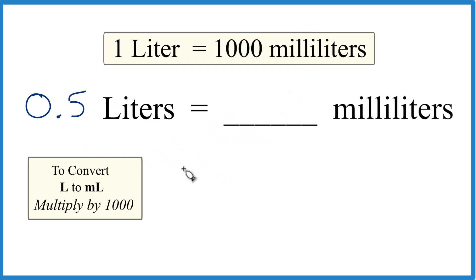We take our 0.5 liters and we're going to multiply by a thousand. Going from liters to milliliters, you multiply by a thousand. That's 1,000 milliliters in one liter, 1,000 milliliters per liter.